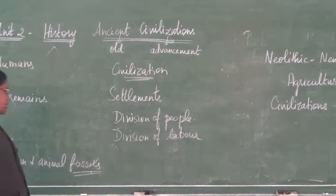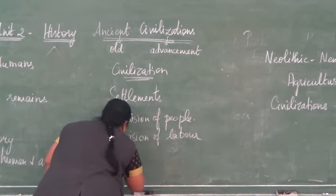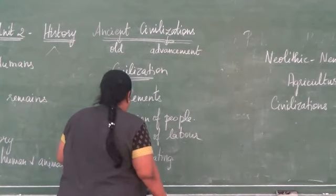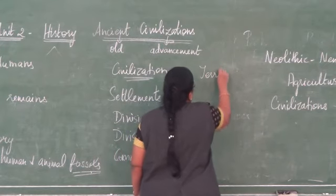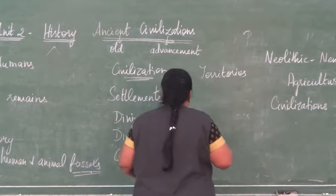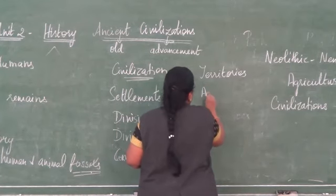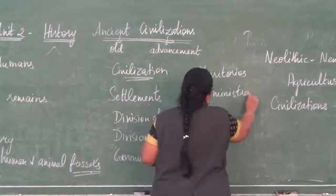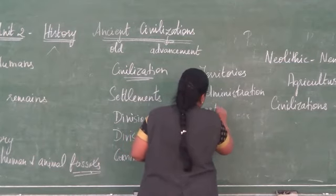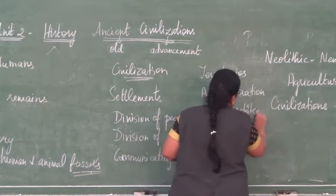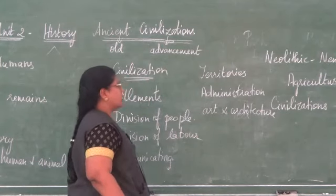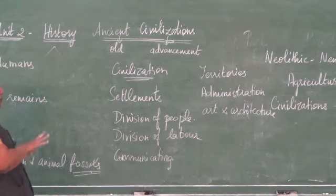People started communicating. Then territories were formed, with different types of administration strategies for different territories. In the field of art and architecture there were different styles — monuments were built, palaces were constructed. From all that, we come to know about the advancement of a particular civilization.